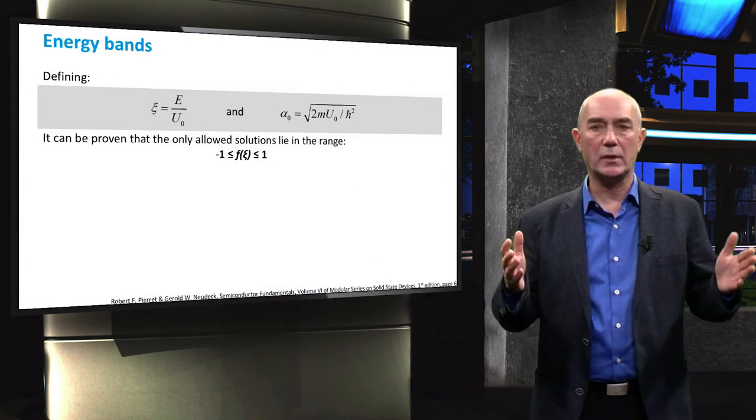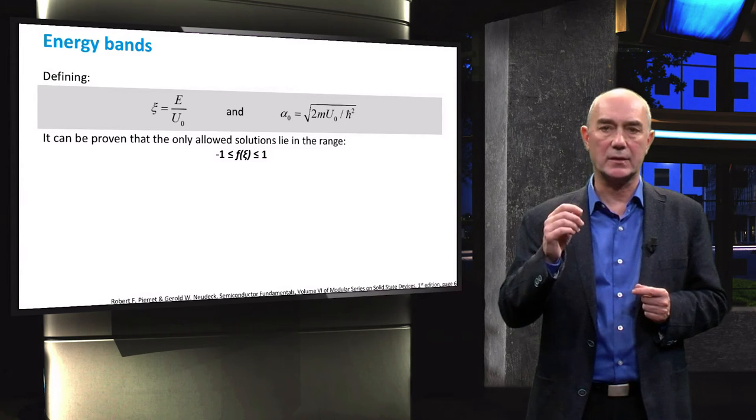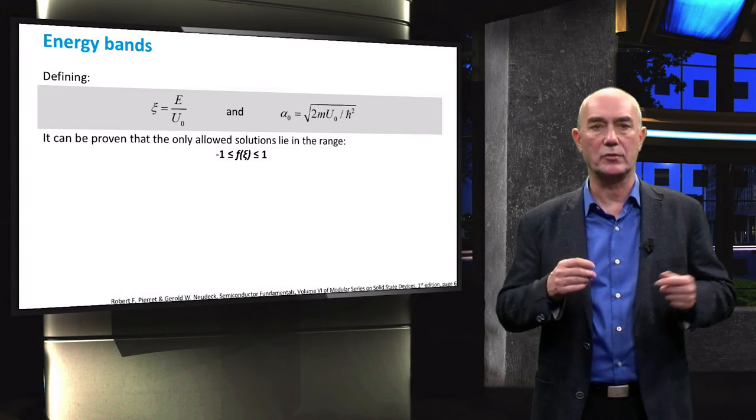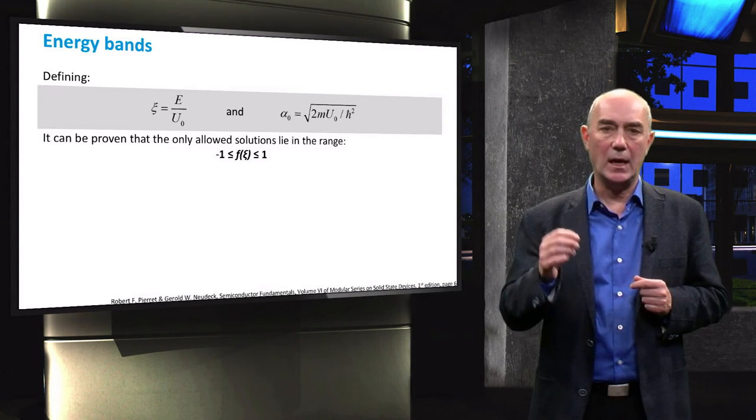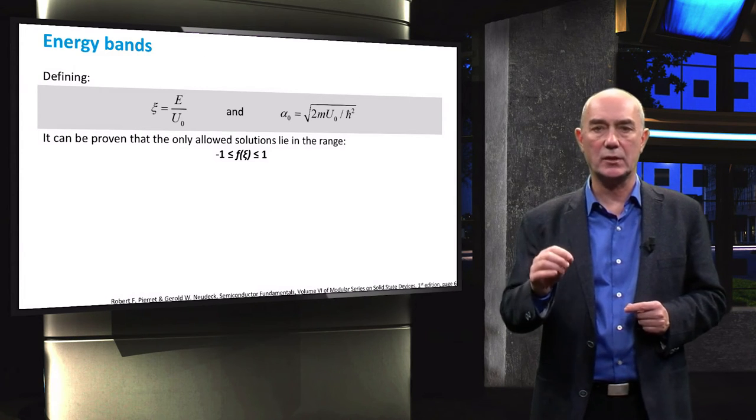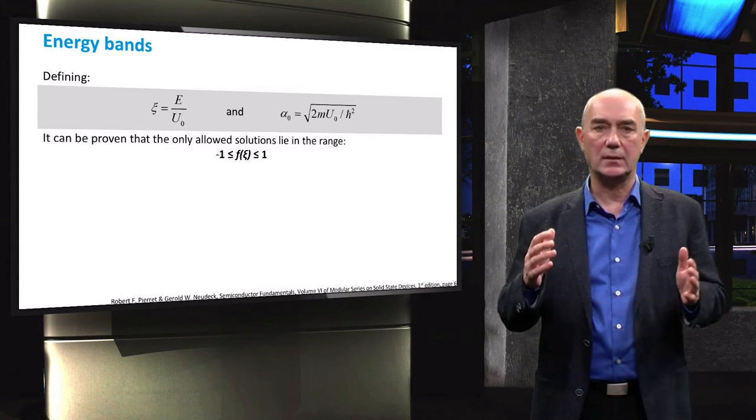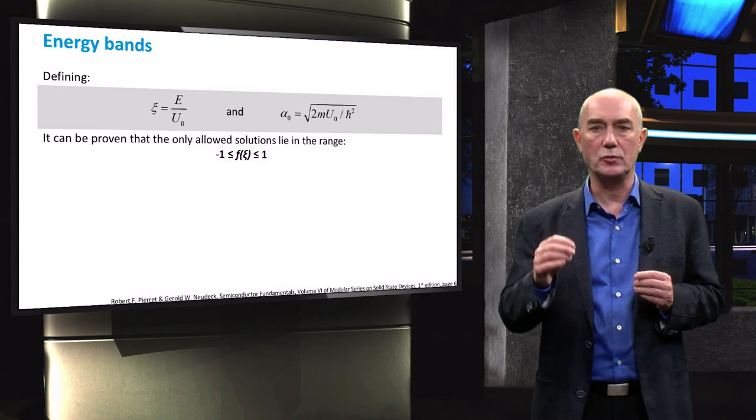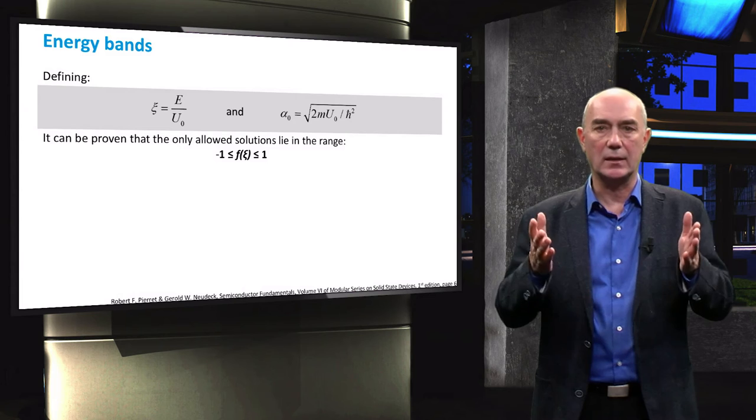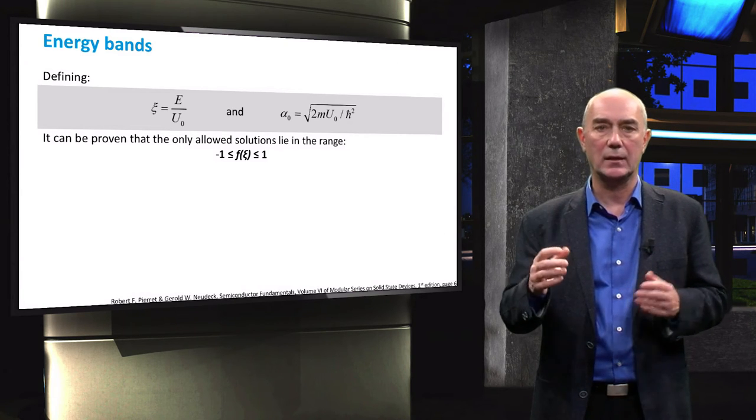In order to visualize the results, let's now define ξ as the ratio between the particle's energy, E, and the maximum potential energy, U₀. The allowed energy values for the system are then those that satisfy the equation we saw in the previous slide. If we adapt this equation using the new defined component of ξ and α₀, we can show that the allowed solutions lie in the range between minus 1 and plus 1.